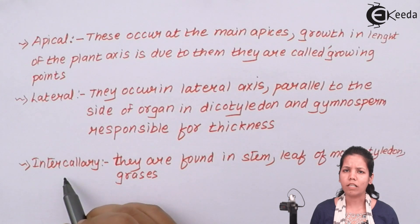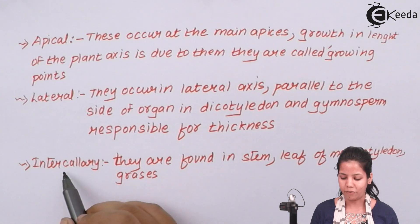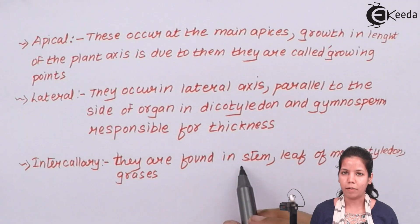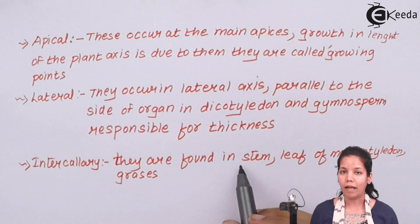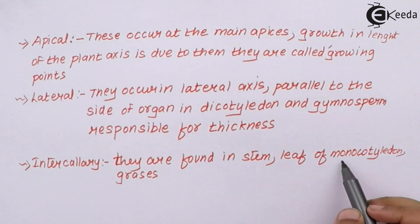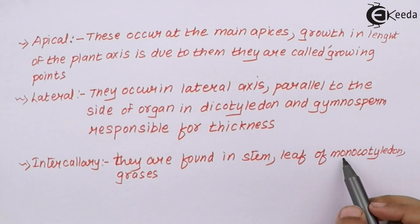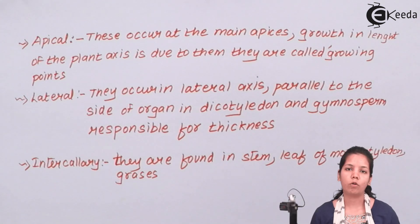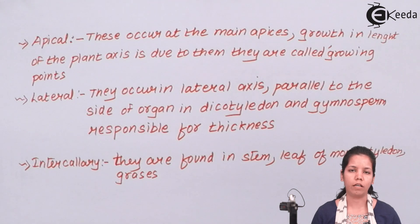The last kind of primary meristem is intercalary meristem, found in the stem. The white region of the stem — the cambium of the stem — is basically due to intercalary meristem. Apart from that, they are also found in monocots like rice and wheat, which consist of a large amount of intercalary meristems. Intercalary meristems are derived from secondary meristematic tissues and at maturity they form permanent tissues such as parenchyma or collenchyma.